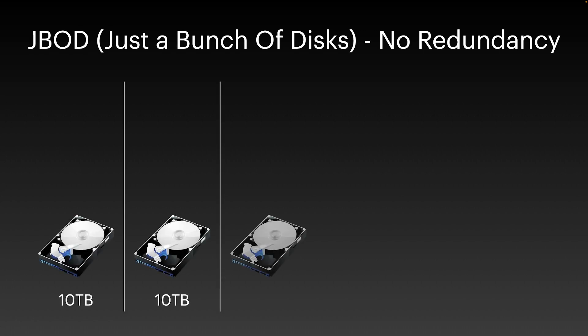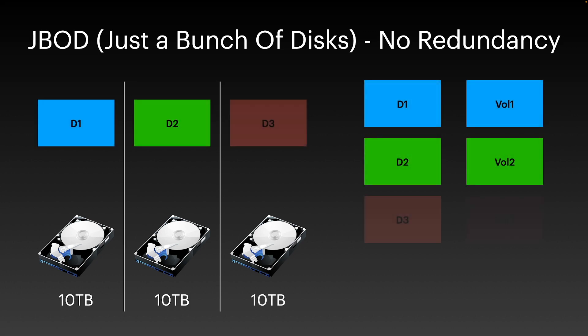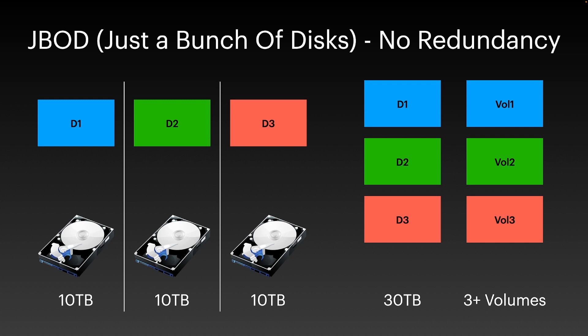Firstly, though not a form of RAID, it should be included for completeness, and this is JBOD, or Just a Bunch of Disks. JBOD allows you to create a collection of independent disks, each storing data. This approach provides no fault tolerance, meaning disk failures would result in the loss of all data on that disk. It is cheap and simple to manage, and allows you to collect different types and sizes of disks together, requiring no fault tolerance overhead, but it does rely on other methods, such as backups, to provide data protection.